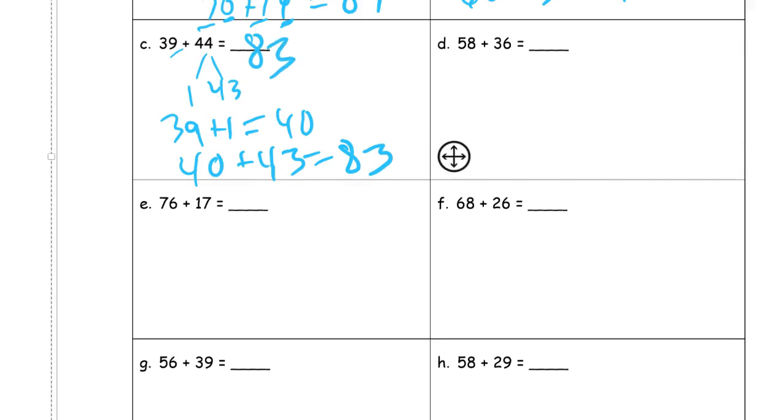And 58 plus 36. I see an 8 there, so I need 2 from this 36 to make it 2 and 34. And 58 plus 2, 60. And 60 plus 34, 94.